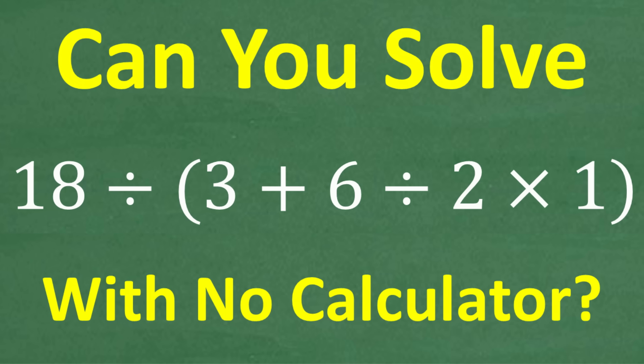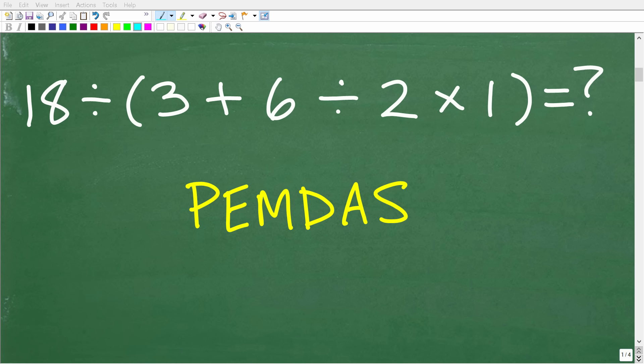All right, so one more time, we have 18 divided by parentheses, 3 plus 6 divided by 2 times 1, and parentheses. Now, of course, this looks like a very simple problem. But I guarantee you, a lot of you are going to be shocked that you're going to get the wrong answer.